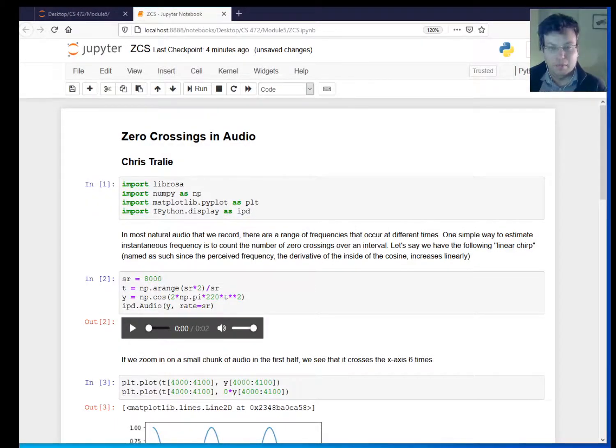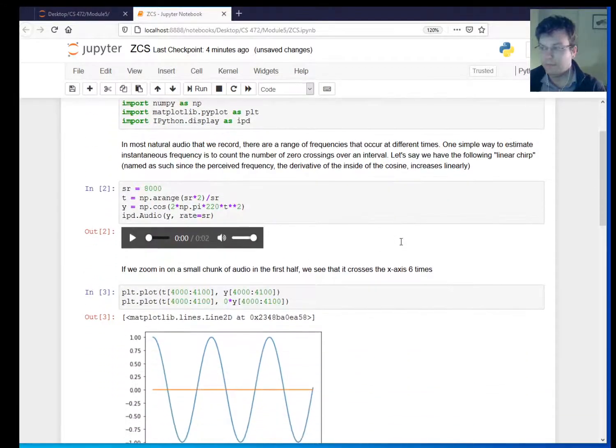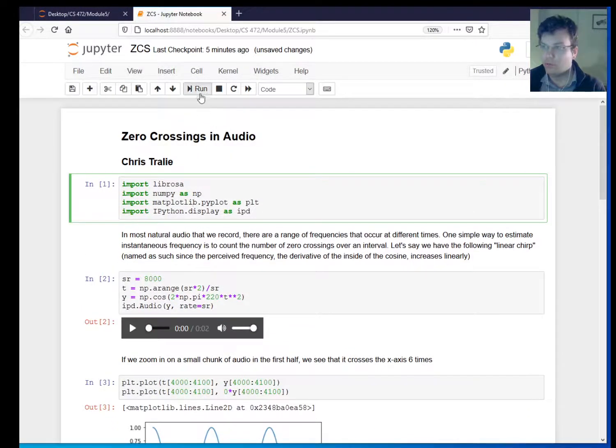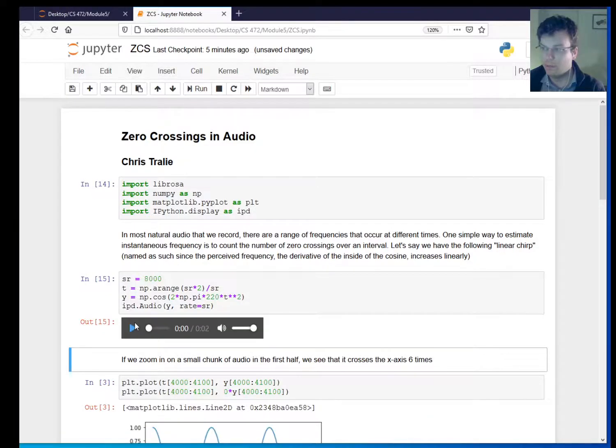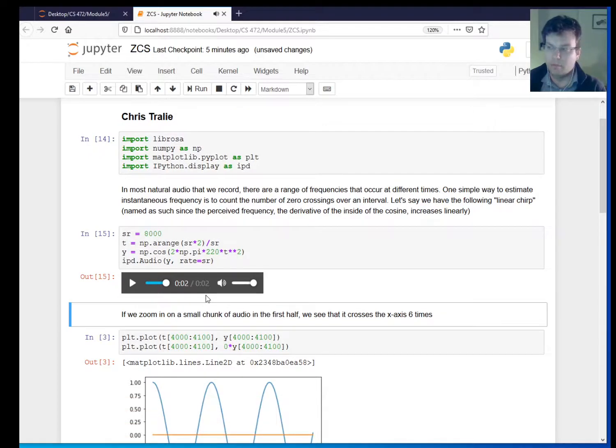Hello. So I would like to finish the discussion of zero crossings so that we really have a solid understanding of it. You can think of zero crossings like a proxy for frequency or a way to estimate instantaneous frequency. So if I make this chirp here, this linear chirp, the frequency is going up over time.